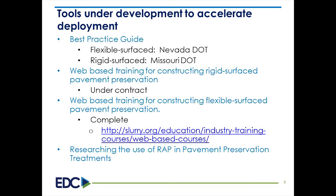When we wrap up all these summits and compile all the feedback, we'll develop an implementation plan for 2017–2018—peer exchanges, webinars, and trainings, whatever is identified as most useful. Tools already under development include best practice guides for flexible surfaces, spearheaded by Nevada DOT, and for rigid surfaces, spearheaded by Missouri DOT. Web-based training for rigid surface pavement preservation is currently under contract, and flexible surface training is already complete and available online.